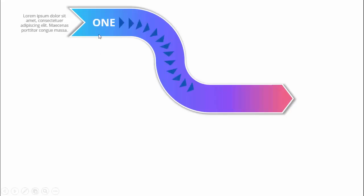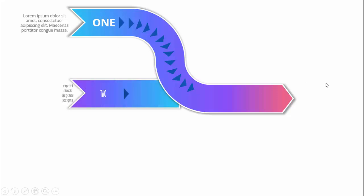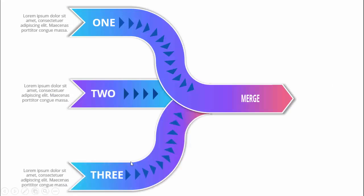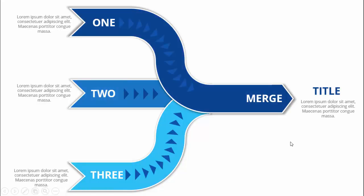It will show step one with some gradient fill. You can add the number here and then add some detailed text. When I click, it will show option two and then option three, which is merging and becoming one object or one point. You can also add a title and some detailed text here.